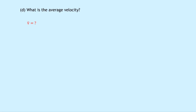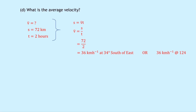Lastly, part D says what is the average velocity? Writing down what we know: average velocity equals question mark. Our displacement from part C was 72 kilometres with a direction — we'll put the direction in at the end. Our time was 2 hours. Writing down our equation s equals v-bar t, rearranging for v-bar gives s over t, which is 72 divided by 2, giving a final answer of 36 kilometres per hour at 34 degrees south of east, or 36 kilometres per hour at a bearing of 124 — using the directions we worked out in part C.